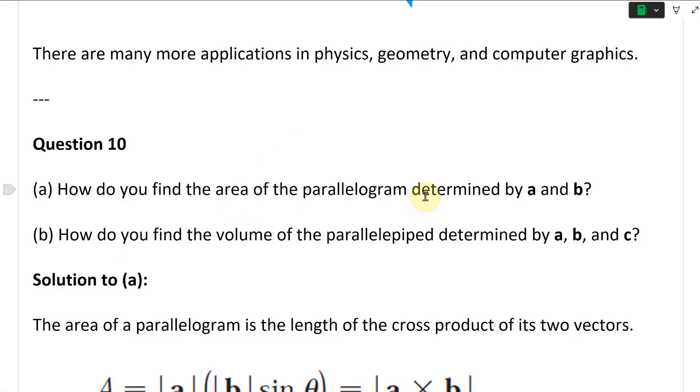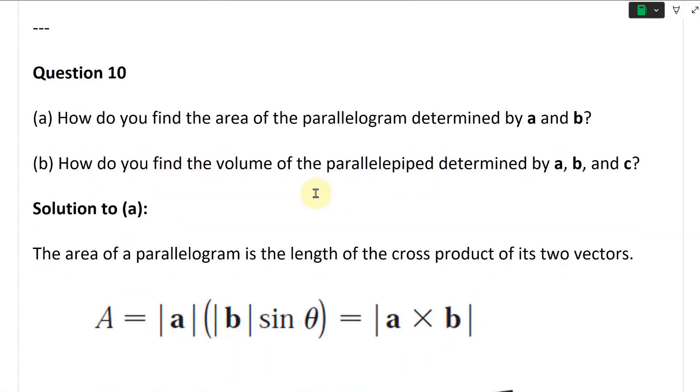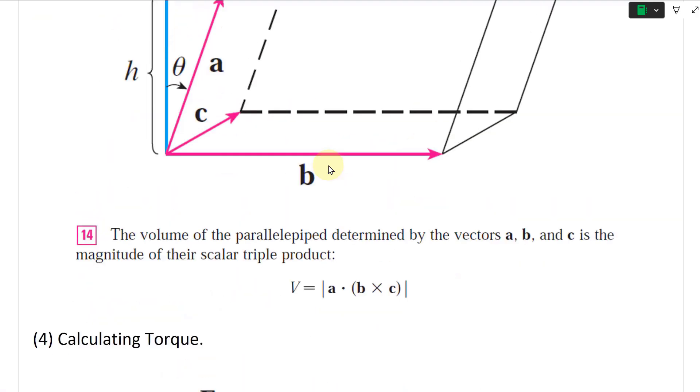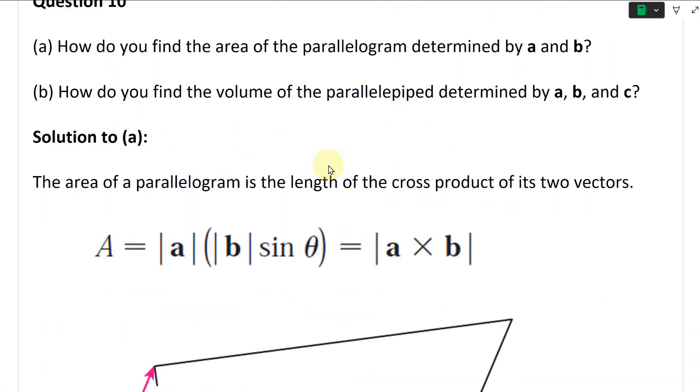Question 10, how do you find the area of the parallelogram determined by A and B? And how do you find the volume of the parallelepiped determined by A, B, and C? Well, we already included this in the useful properties, and so on. So we'll just repeat that again.